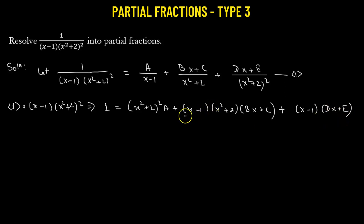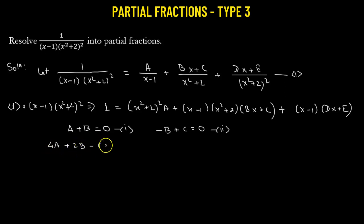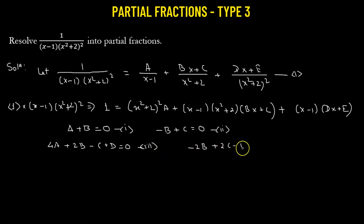In the next step, we equate the coefficients of like powers of x on both sides, giving us several equations. Equation 1: A plus B equals 0. Equation 2: negative B plus C equals 0. Equation 3: 4A plus 2B minus C plus D equals 0. Equation 4: negative 2B plus 2C minus D plus E equals 0.